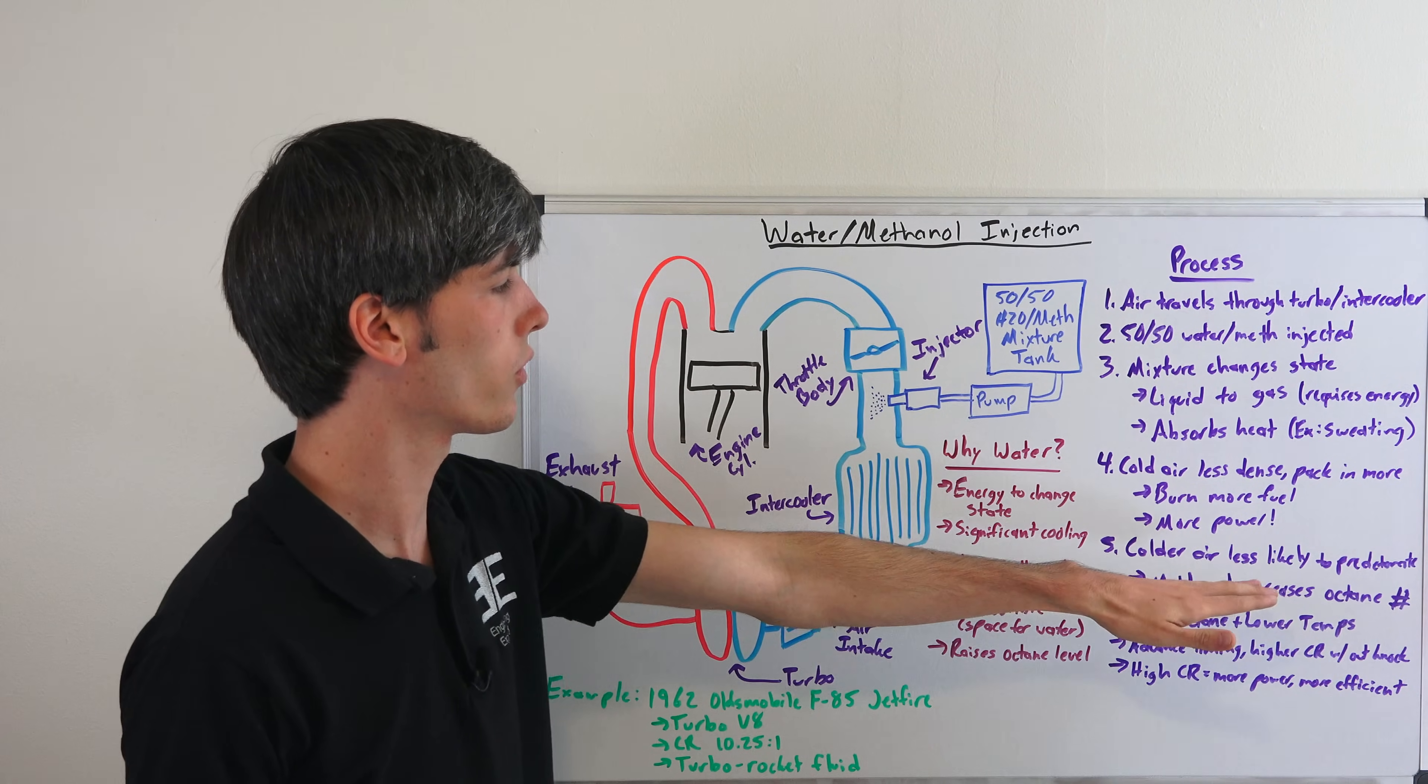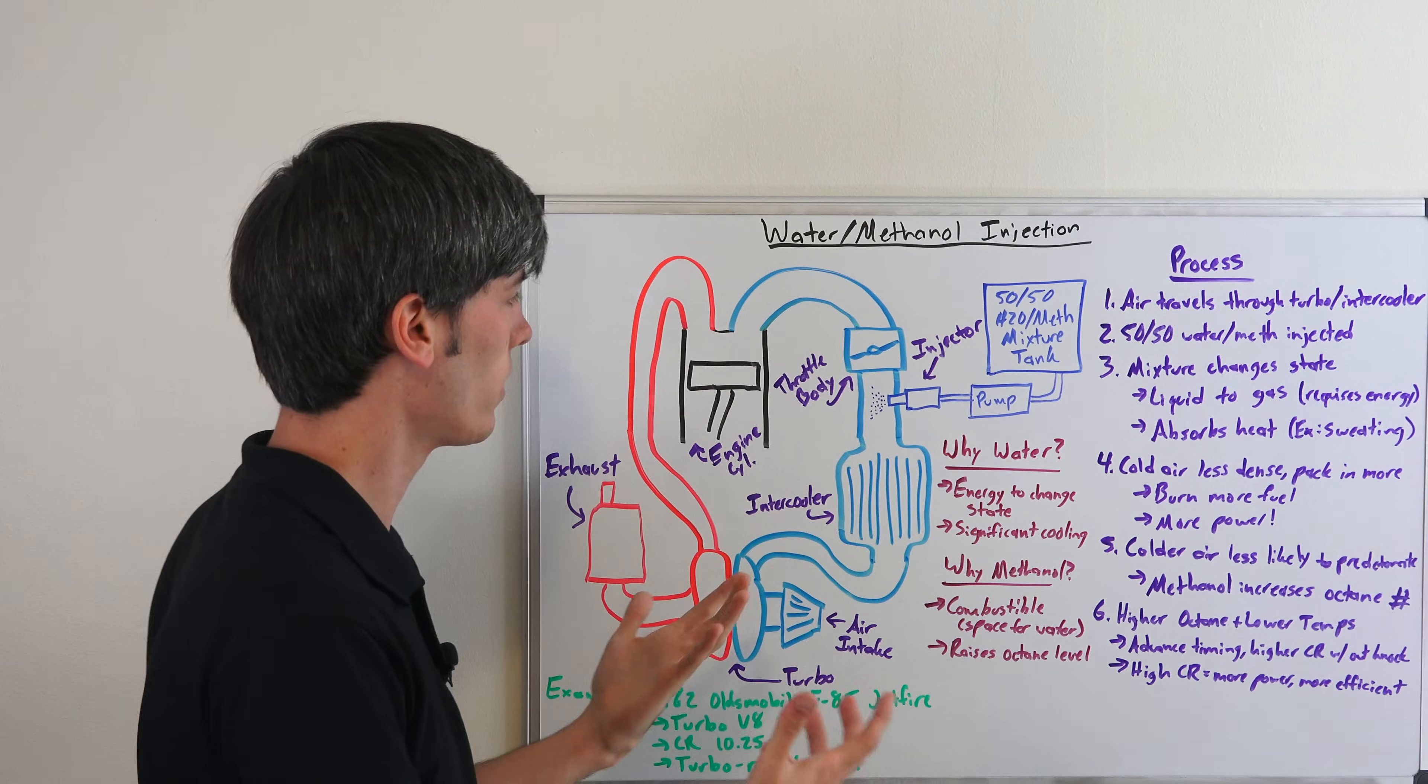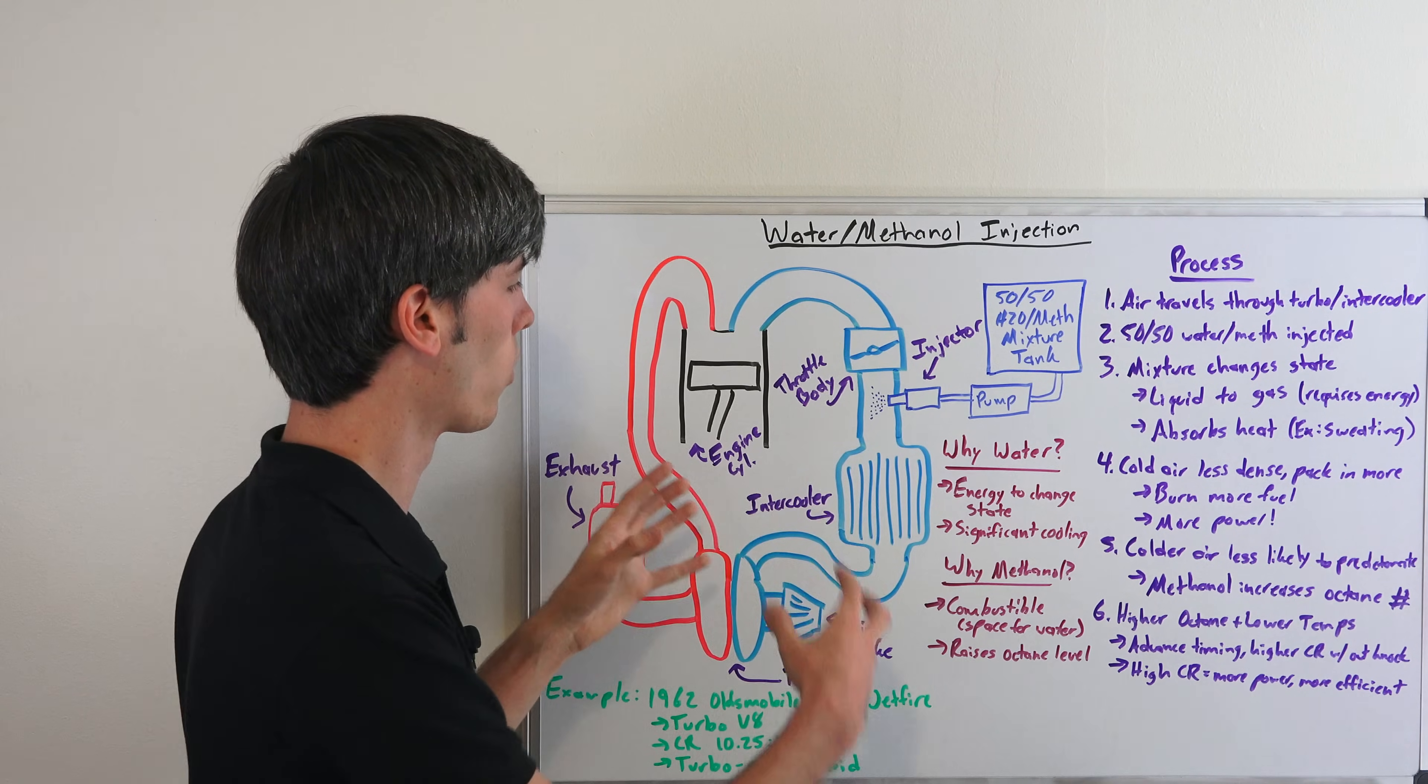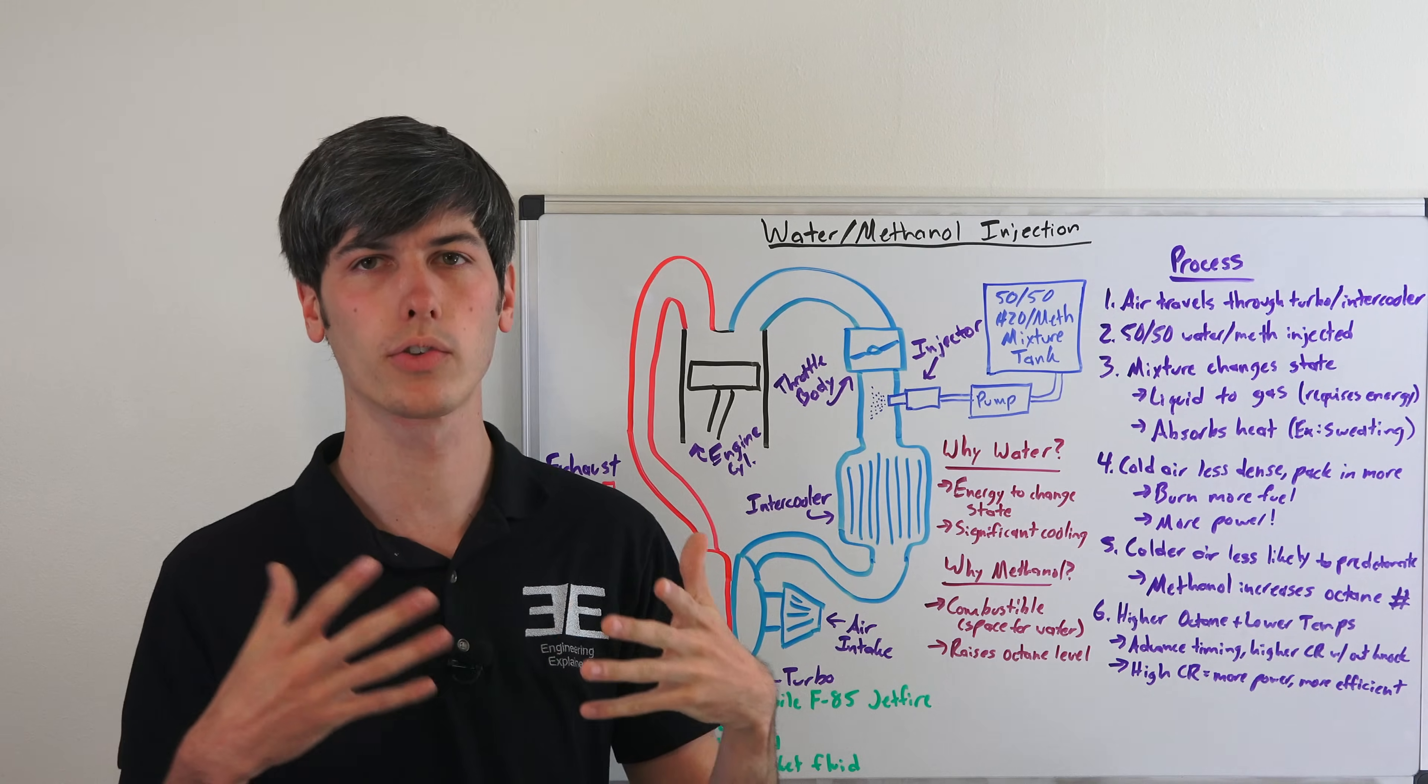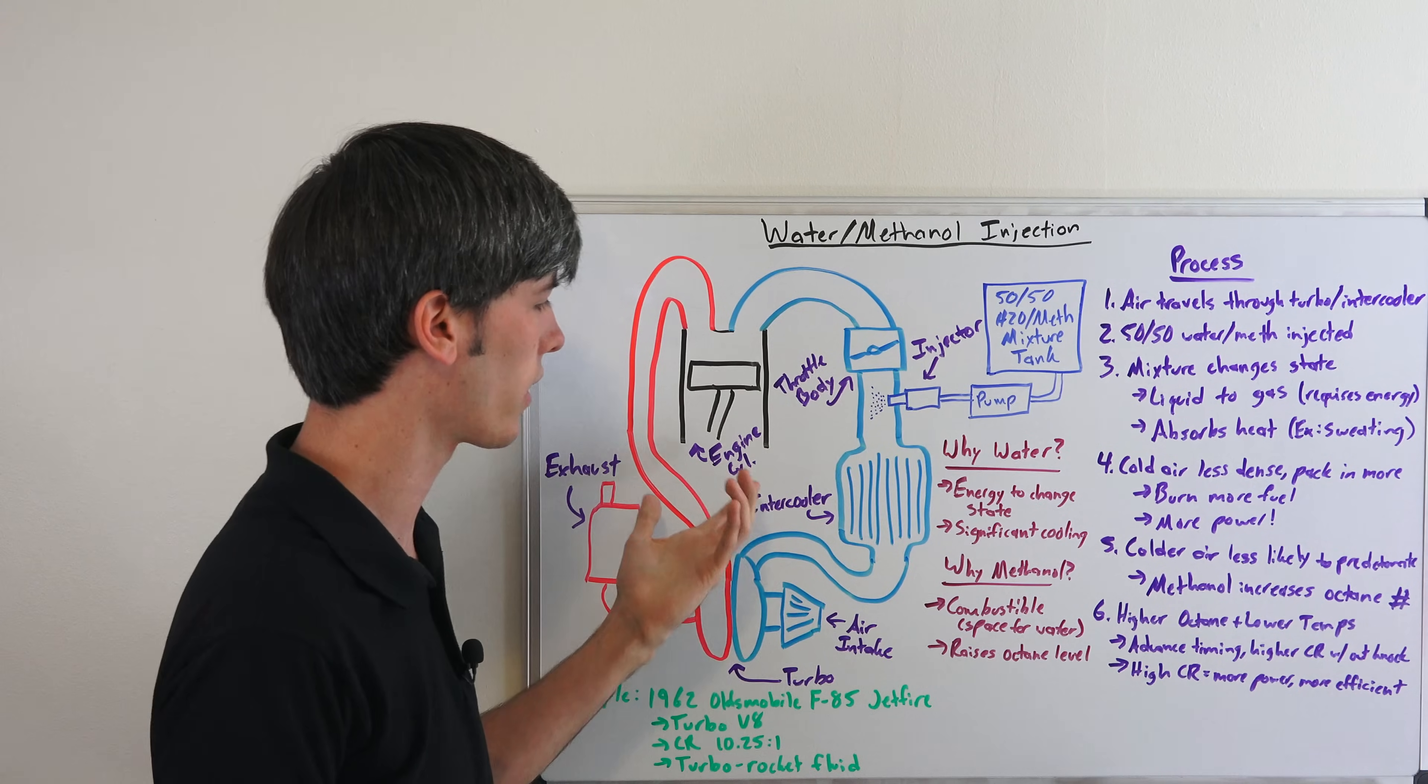Colder air is also less likely to pre-detonate, and methanol in this mixture also raises the octane level. Having a higher octane level means you're less likely to have knock. So by having higher octane and lower temperatures, you've got more fuel, more power, and higher octane fuel, you can advance the timing more. By advancing the timing more you can create more power or you could also use a higher compression ratio or use this in a situation where you have a very high compression ratio on an engine.